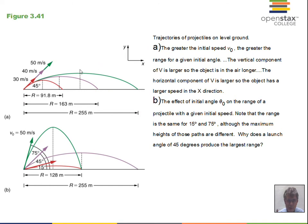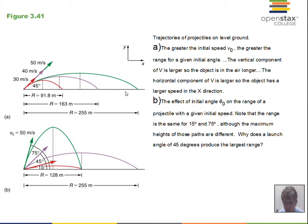Here we're always launching at 45 degrees but with three different speeds. Why does the range increase as speed increases? There are two reasons: when the velocity magnitude increases, we get a bigger velocity in the y direction so the object goes higher and is in the air longer. In the x direction, the x component of velocity is also larger, and with more time in the air, distance equals rate times time gives a bigger range.